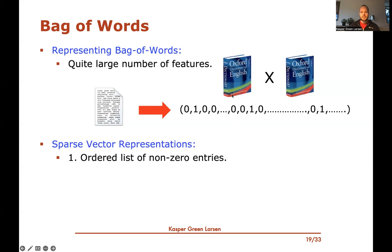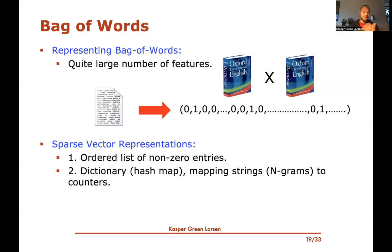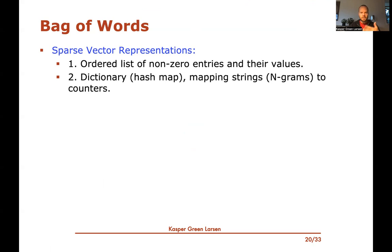In particular, with two-grams there were 29 billion possible pairs of words in the English dictionary, but text is never billions of words long. So what we're going to do is represent the feature vector in a different format than just writing down a huge vector with a few non-zeros. We can use sparse vector representations. One is to use an ordered list of non-zero entries. The other is to use a dictionary or hash map that maps strings — like the n-grams that occur — to a counter of how many times each appears.